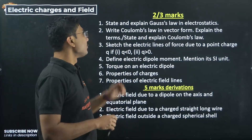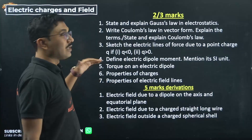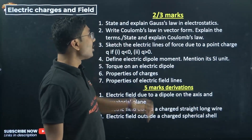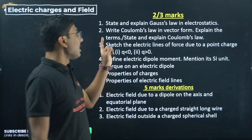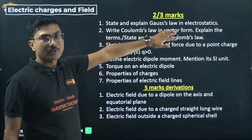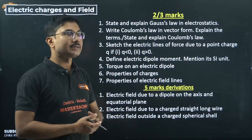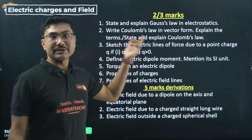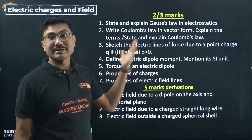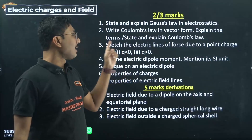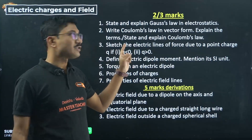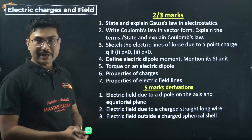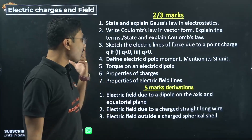First, Electric Charges and Fields — a very important chapter from which 10 to 11 marks are going to come. Important questions: state and explain Gauss's law in electrostatics; write Coulomb's law in vector form or state and explain Coulomb's law — these two are almost the same so studying one covers the other. Sketch the electric field lines of force for q less than zero, q greater than zero, and electric dipole. Define electric dipole moment and mention its SI unit. Torque on an electric dipole — find the expression for torque acting on an electric dipole.